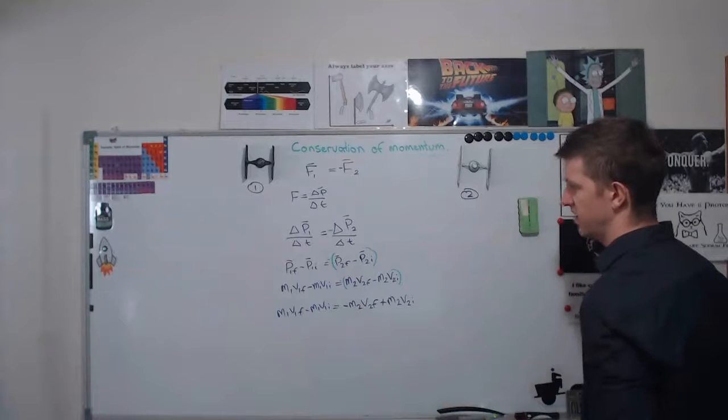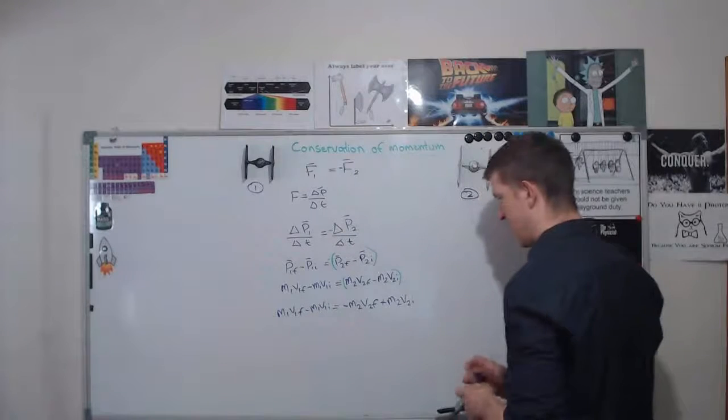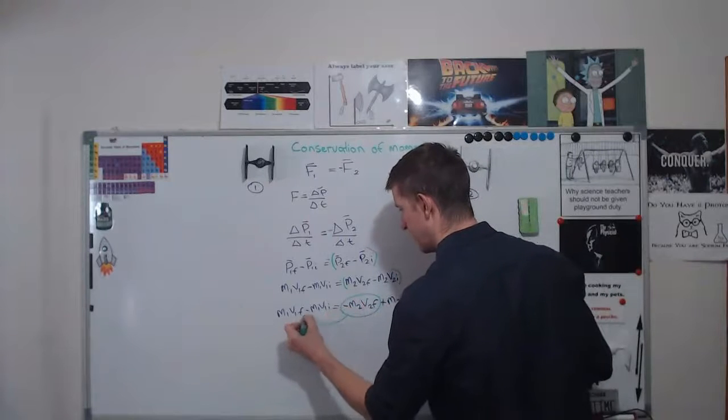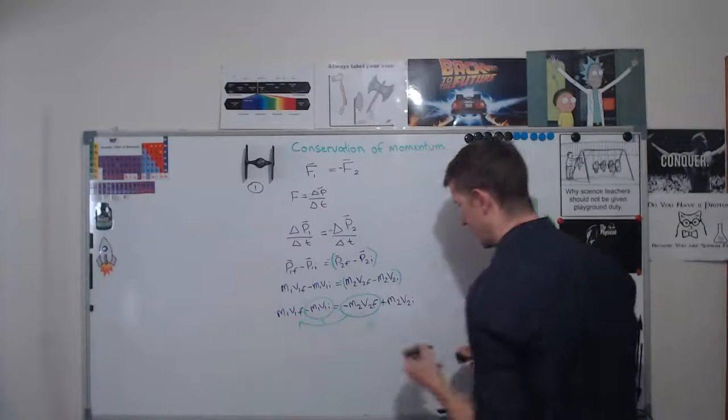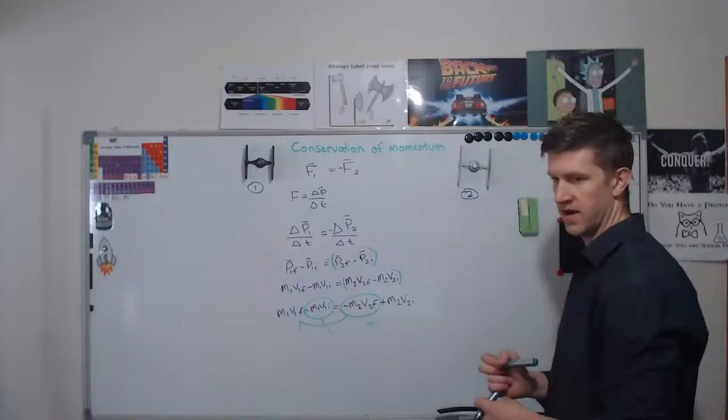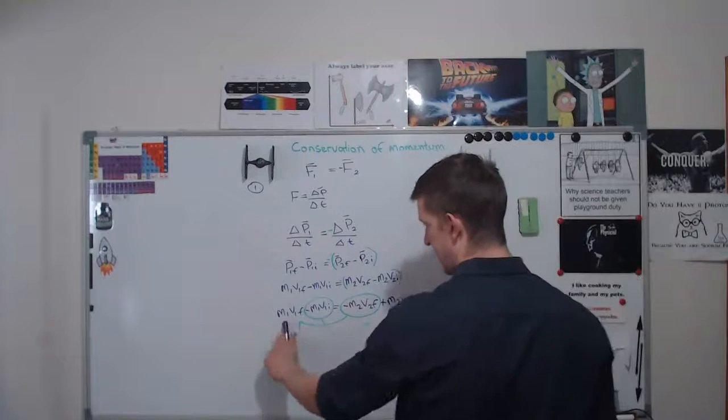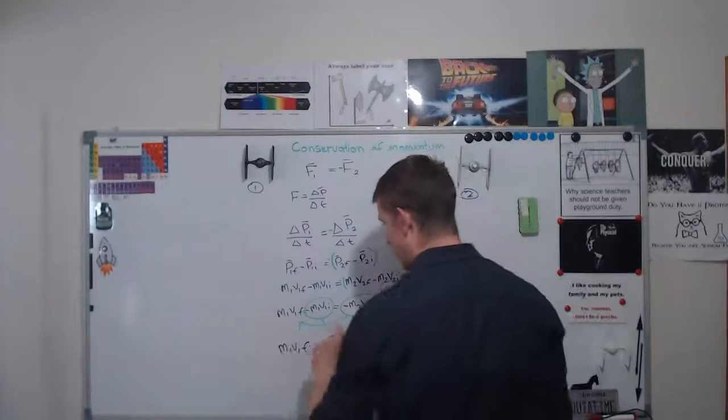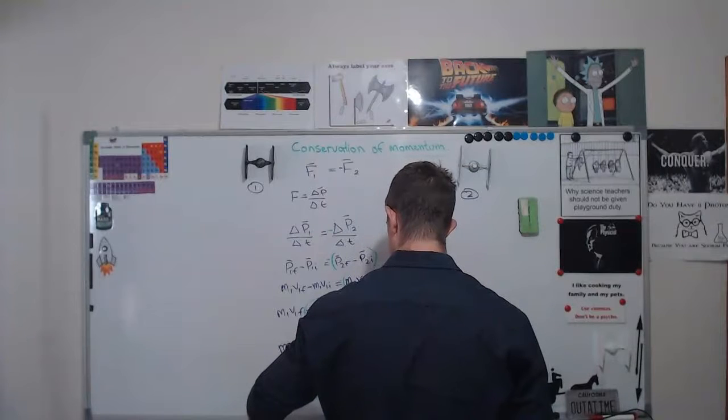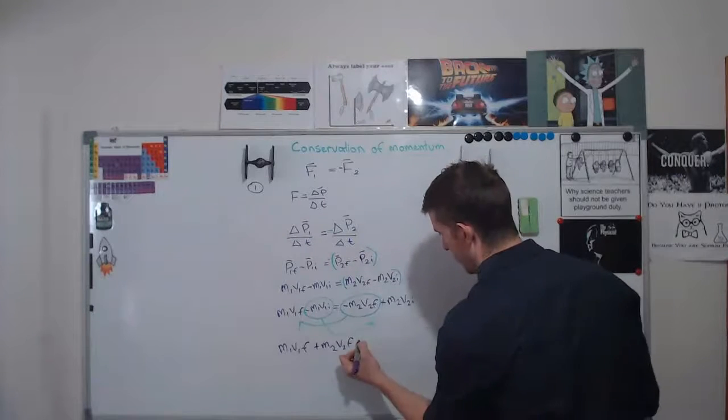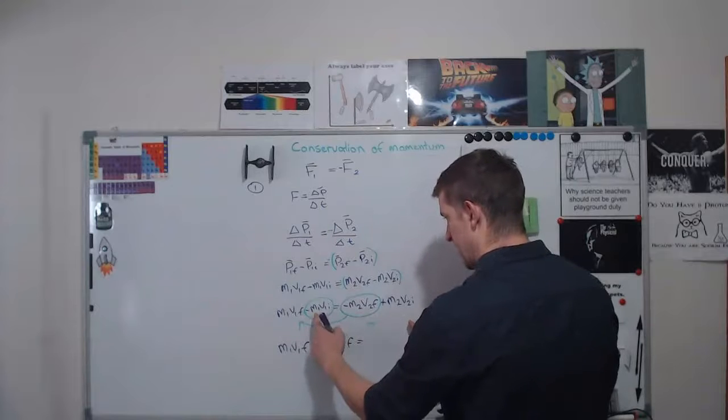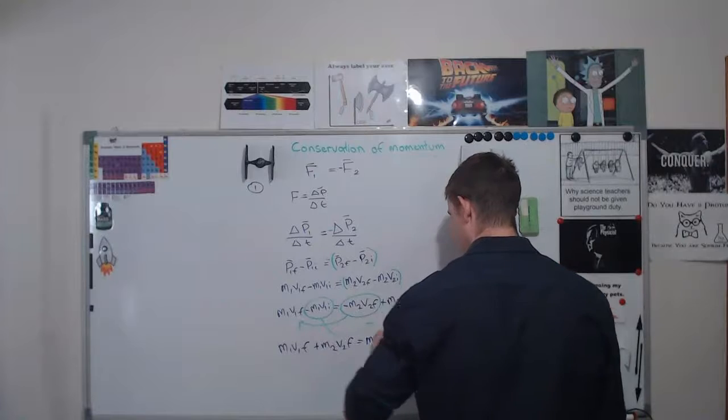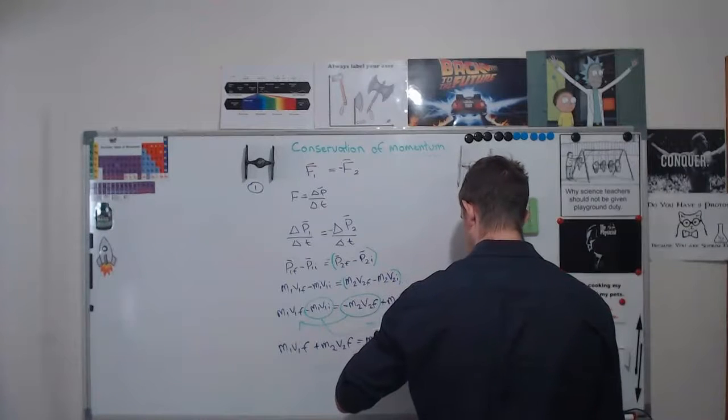Now I can rearrange just a little bit if I wanted to. So I've got a negative here and I've got a negative here. So if I move this to this side and I move this to this side to get rid of the negatives, I end up with quite a nice expression. So if I keep this, I've got my M1 V1 final. I've now added because I've moved to the cross M2 V2 final. And on the right hand side, I'm going to have my plus M1 V1 initial plus, because it always was, M2 V2 initial.